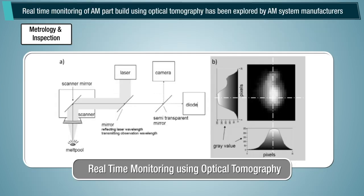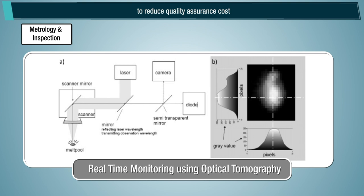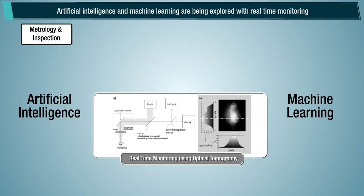Real-time monitoring of additive manufacturing part builds using optical tomography has been explored by additive manufacturing system manufacturers to reduce quality assurance costs. Artificial intelligence and machine learning are being explored with real-time monitoring to be able to rectify defects by altering process parameters in real-time.